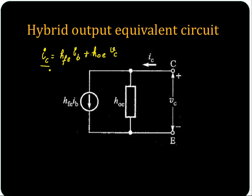Here it is a current equation, so you have to apply Kirchhoff's current law. IC equals HOE times VC, where VC is the output voltage.